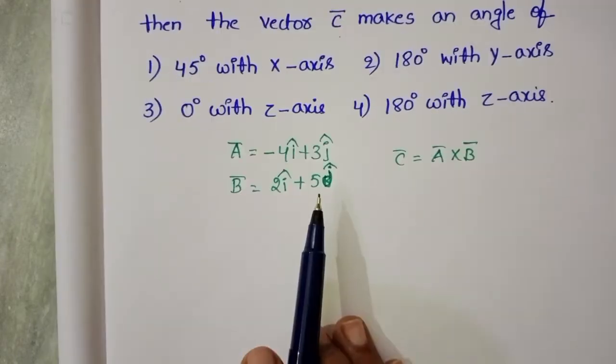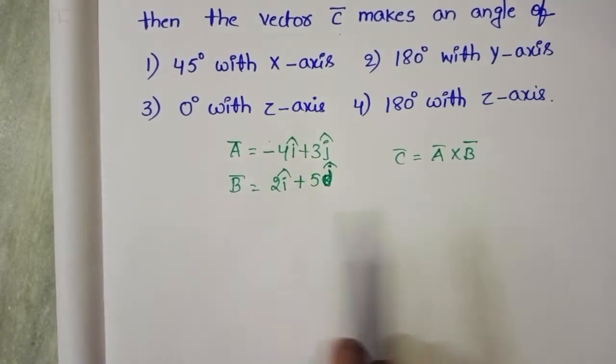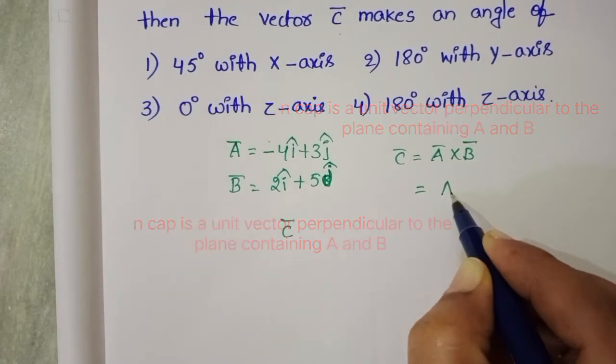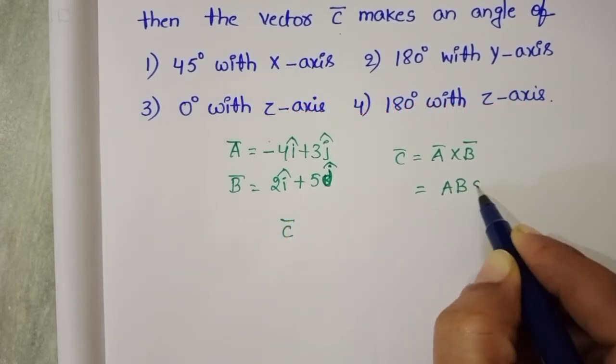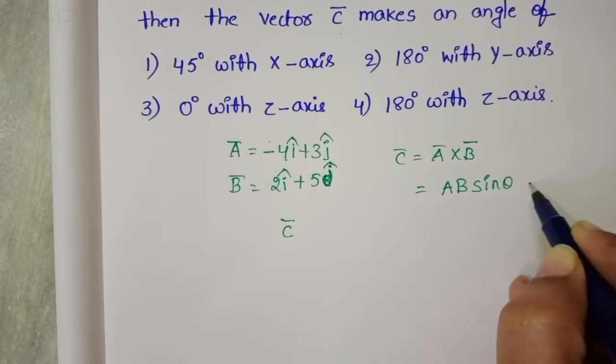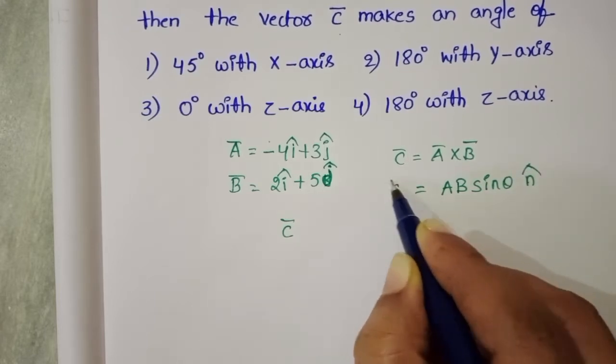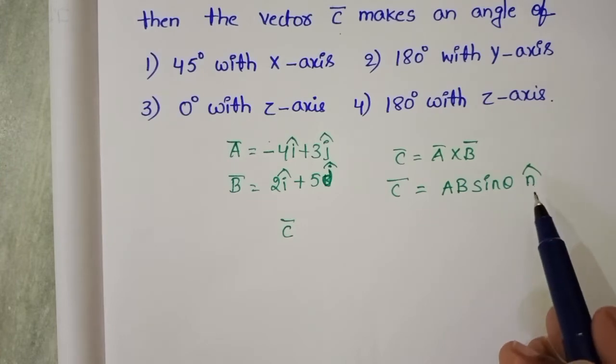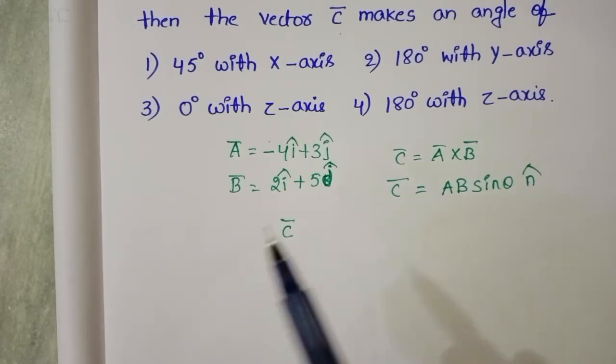The cross product of 2 vectors is C̅. We know A̅ × B̅ equals AB sin θ n̂, where n̂ is a unit vector perpendicular to the plane containing A and B.